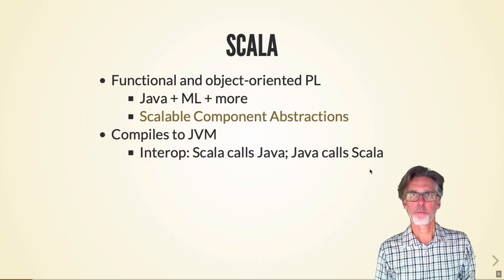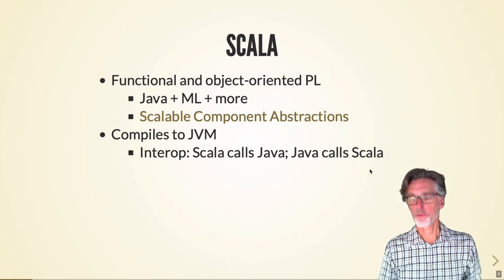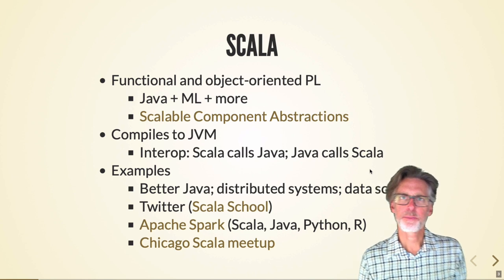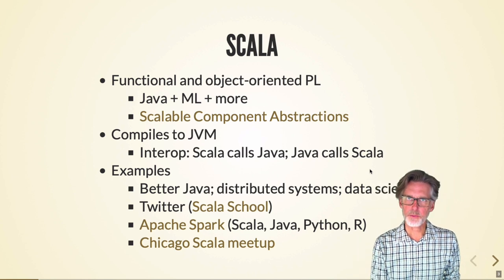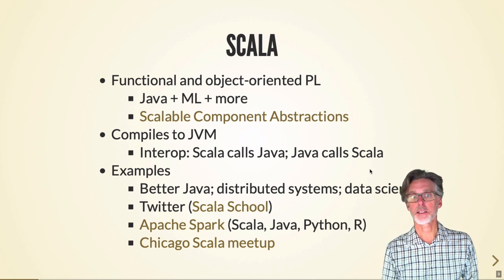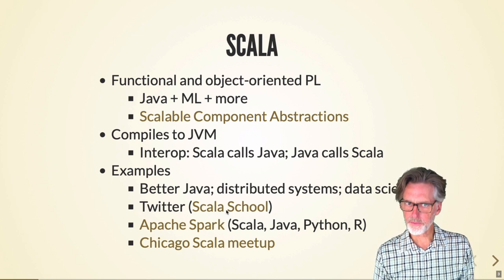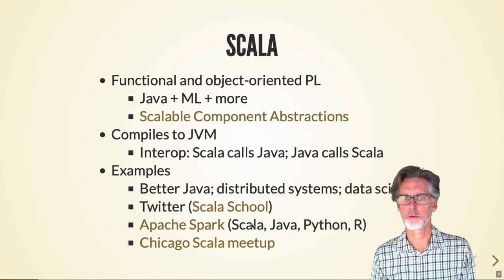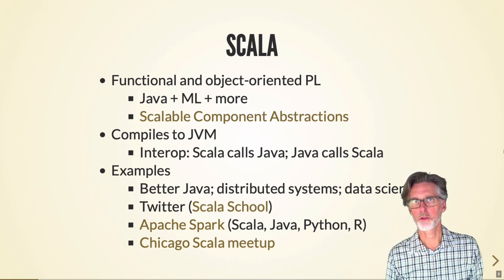It compiles to the Java virtual machine and allows interoperability between Java and Scala, and it's become quite popular both for distributed systems programming and for data science. Significantly, Twitter has adopted Scala and Apache as well in the data science realm. There's a Chicago meetup for Scala which you should check out.